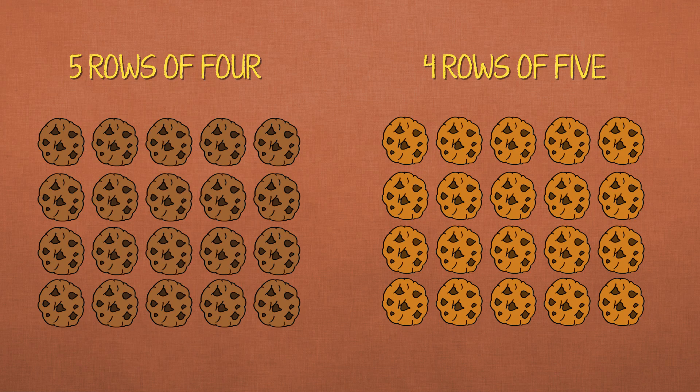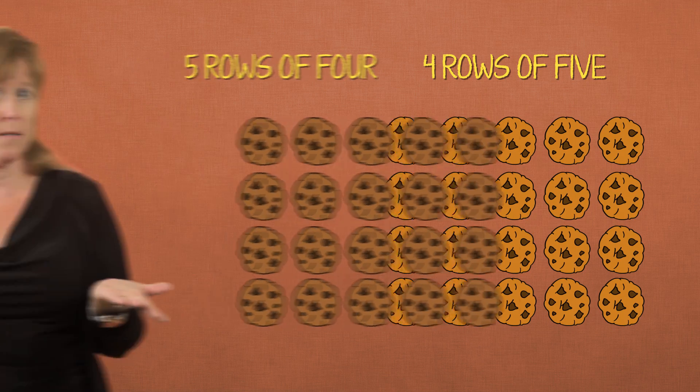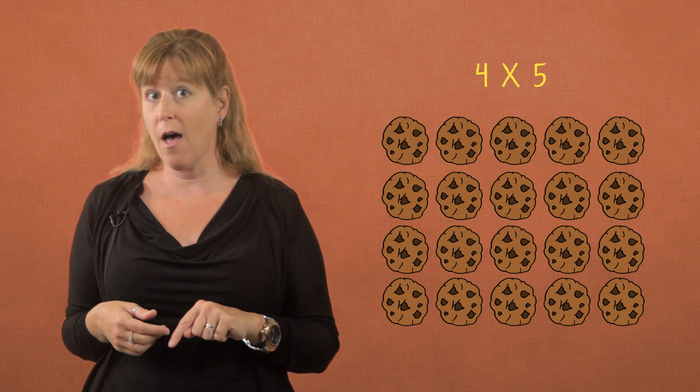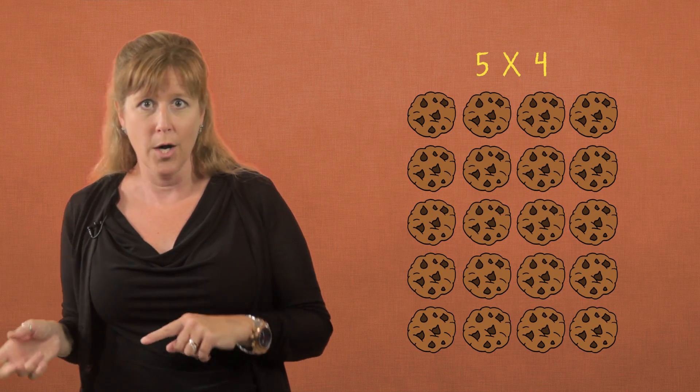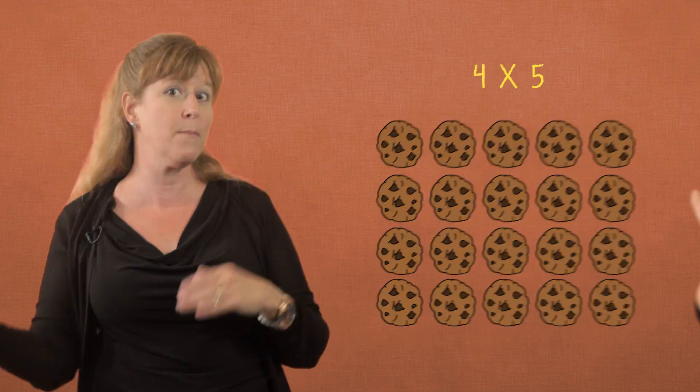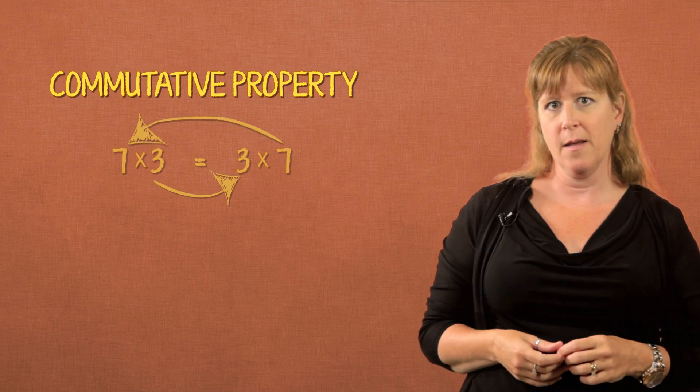Isn't this just the same as this? So four times five is the same as five times four — okay, I think you've got it. This is the commutative property.